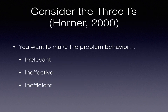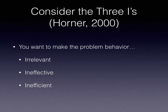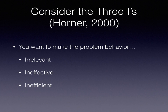Another way to address problem behaviors is to consider the three I's that Rob Horner discussed: making the problem behavior irrelevant, ineffective, and inefficient. Making it irrelevant means changing something about the environment or about peer and adult behavior so the problem behavior is no longer needed. For example, if a child has problem behavior 30 minutes before lunch because they're starving, institute a snack time an hour before lunch to prevent the need for the problem behavior.